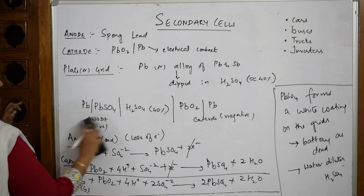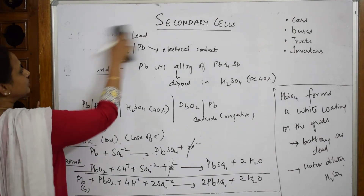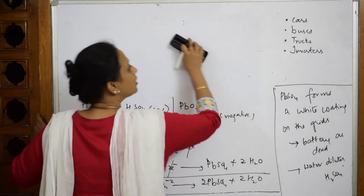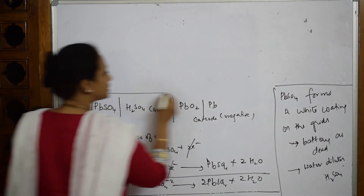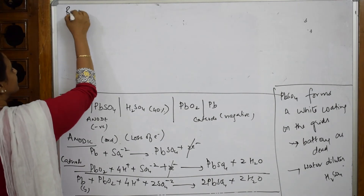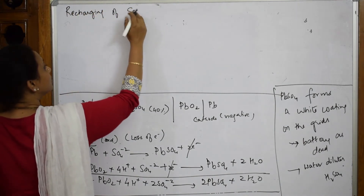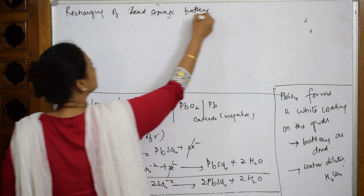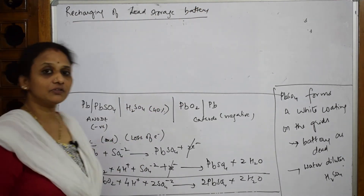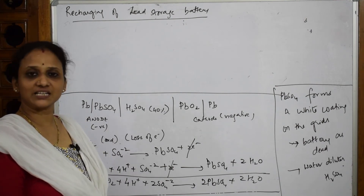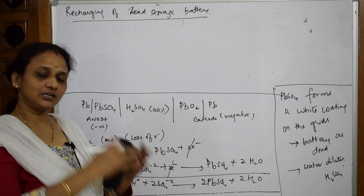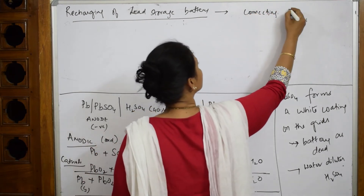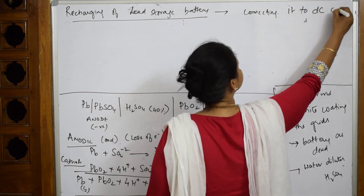Now let us look at the recharging process — heading: 'Recharging of Lead Storage Battery.' Recharging is done by connecting the battery to a DC current source. The negative electrode of the cell is connected to the negative terminal of the DC supply.